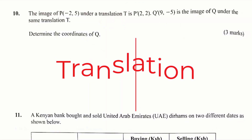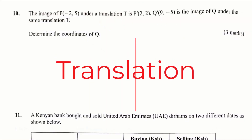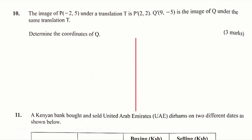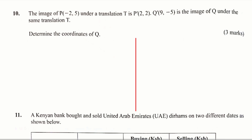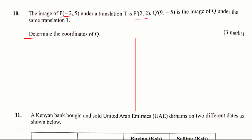Question number 10. The image of P, negative 2, 5, under translation T is P' 2, 2. Q' is the image of Q under the same translation T. Determine the coordinates of Q. So the first thing you're going to do is to calculate the translation vector that maps object P to P'. And how do we get the translation vector?